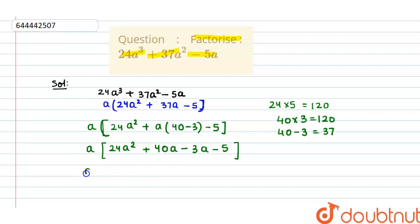Now it can be written as a, here from 24a² minus 3a plus 40a minus 5. Now we will take from here 3a as common and from this we can take 5 as common.